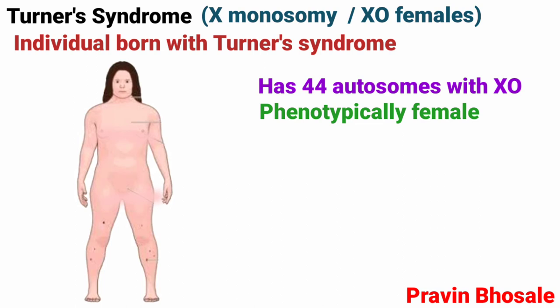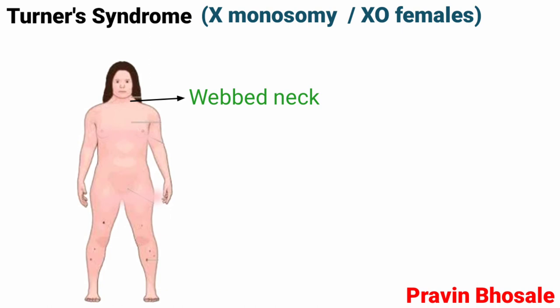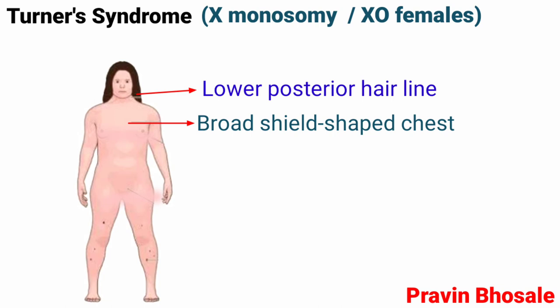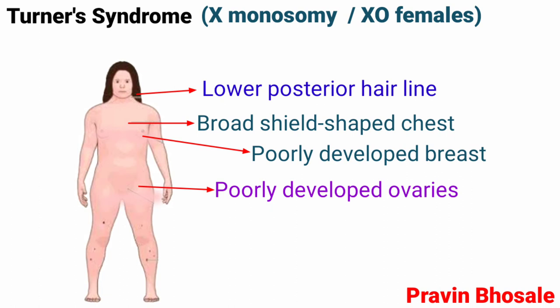Individuals with Turner syndrome have a short stature and webbed neck, lower posterior hairline, broad shield-shaped chest, poorly developed ovaries and breasts, and low intelligence.